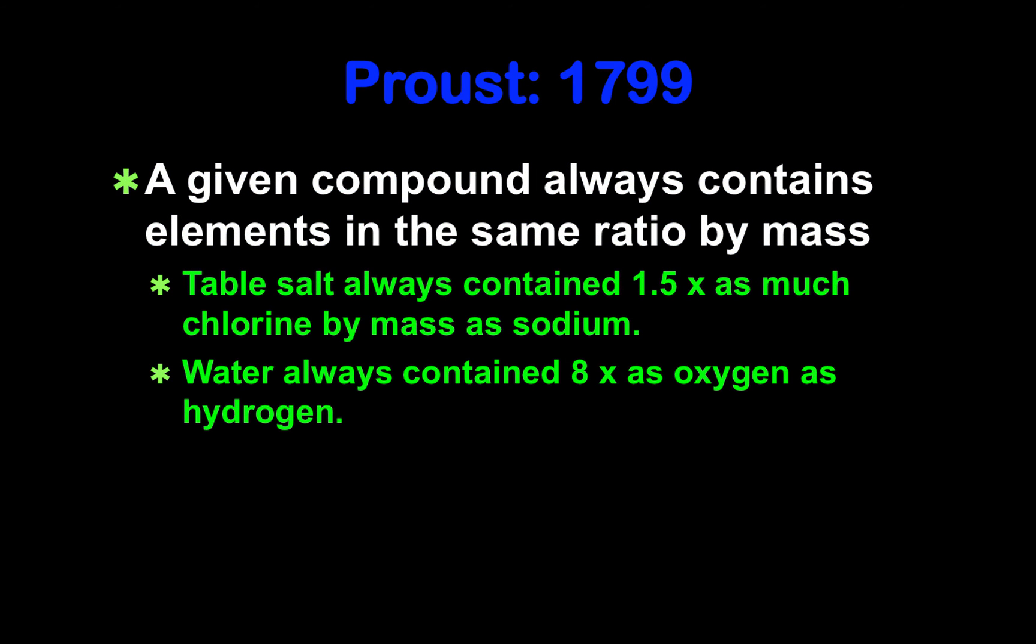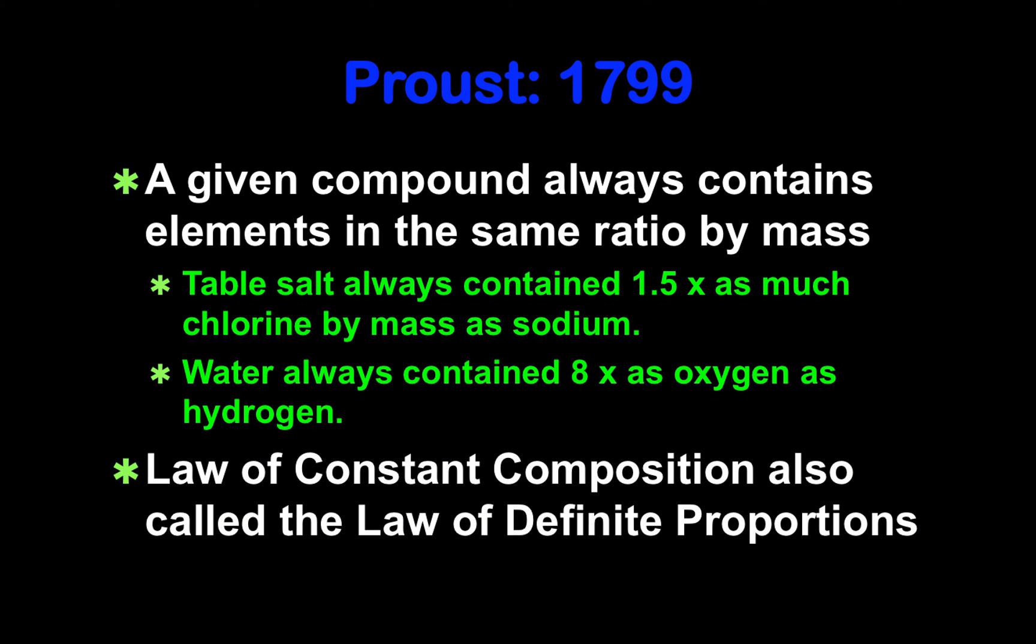Now let's consider the work of Proust. Louis Proust analyzed the composition of several compounds. He found that they always contain the same ratio by weight of their elements. A given compound always contains elements in the same ratio by mass. For example, he found that table salt always contained 1.5 times as much chlorine by mass as sodium, and that water always contained 8 times as much oxygen as hydrogen. This became known as the law of constant composition, also known as the law of definite proportions.